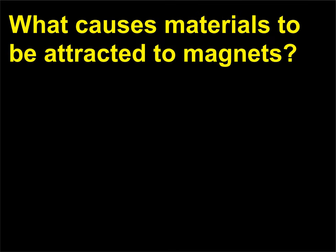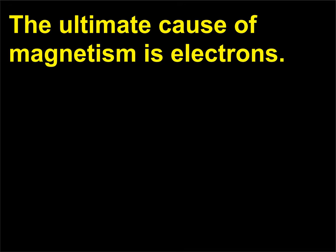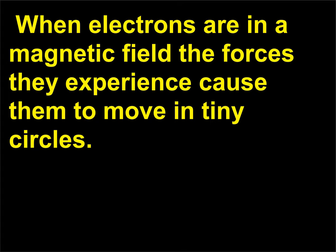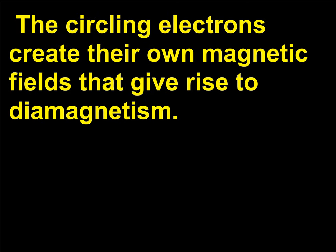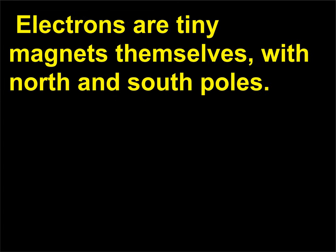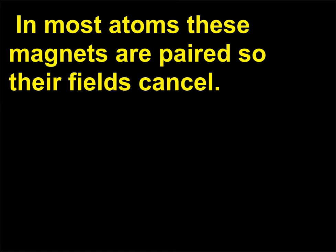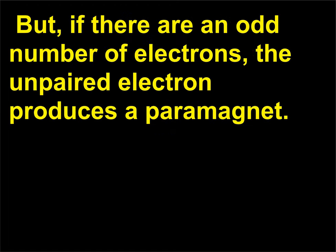What causes materials to be attracted to magnets? The ultimate cause of magnetism is electrons. When electrons are in a magnetic field, the forces they experience cause them to move in tiny circles. The circling electrons create their own magnetic fields that give rise to diamagnetism. Electrons are tiny magnets themselves, with north and south poles. In most atoms these magnets are paired so their fields cancel. But if there are an odd number of electrons, the unpaired electron produces paramagnetism.